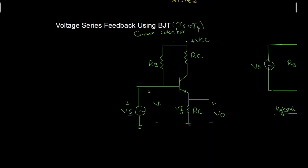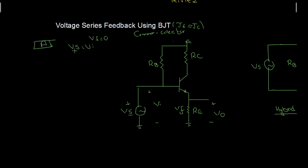In BJT, the emitter current is approximately equal to the collector current. To perform the AC analysis, I am going to ground the supply. To find the gain without feedback, let us call it A. When Vf is equal to zero, Vs equals Vi.